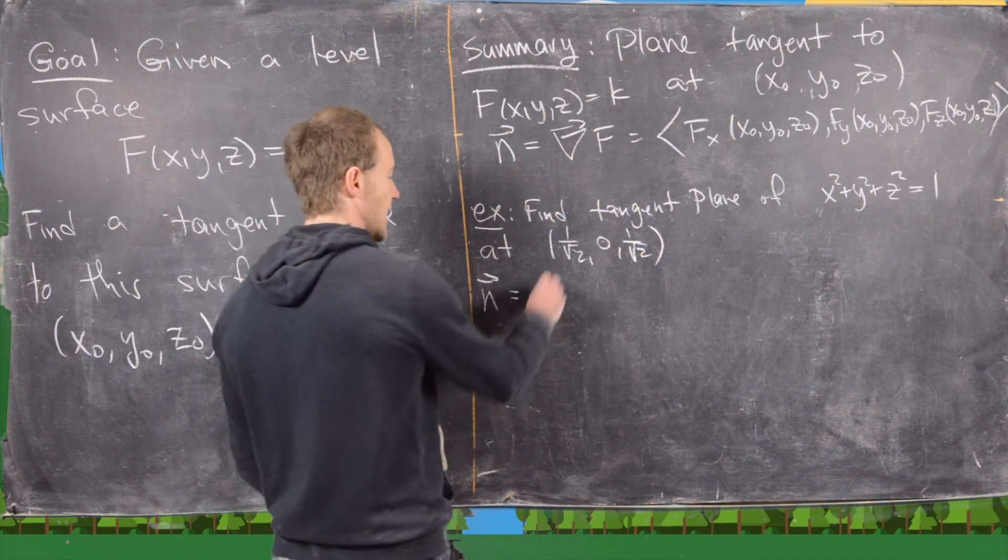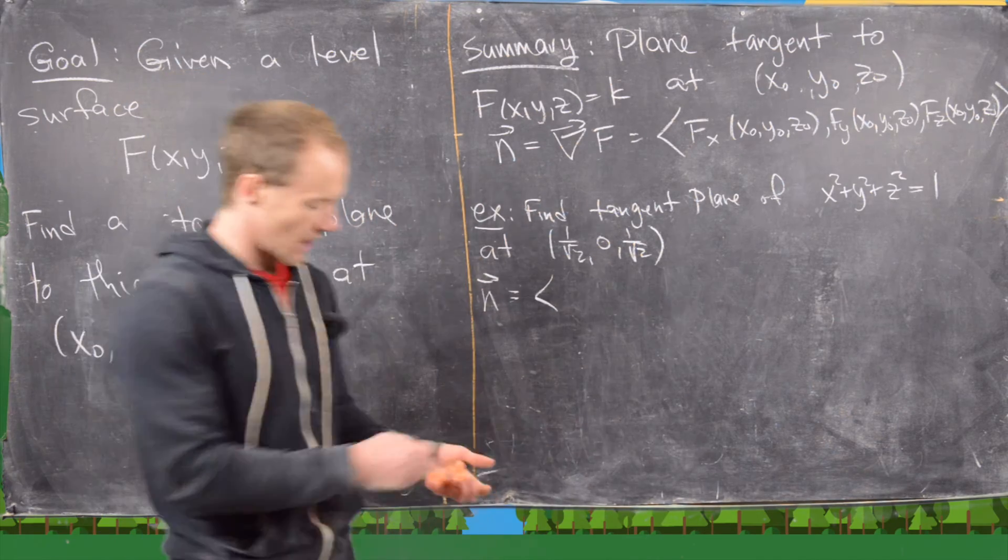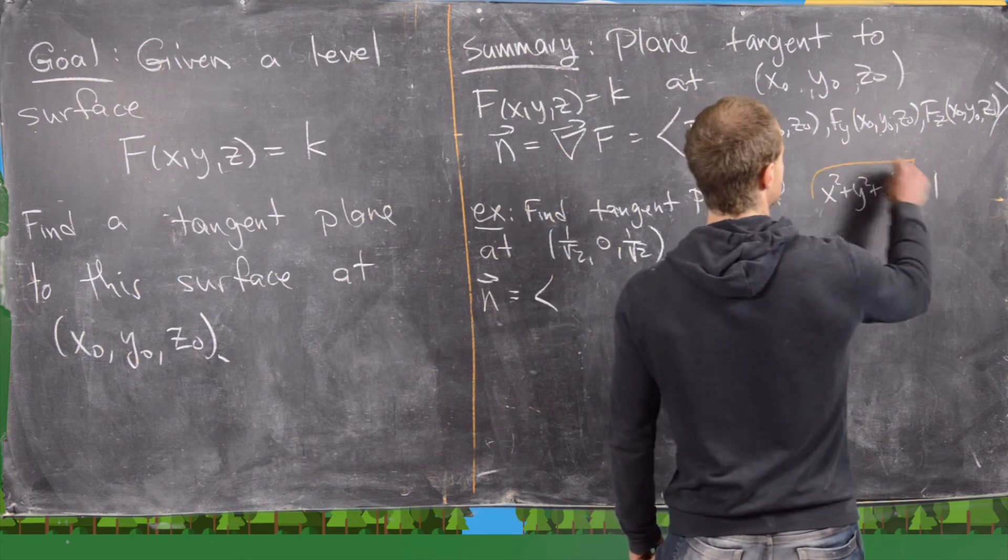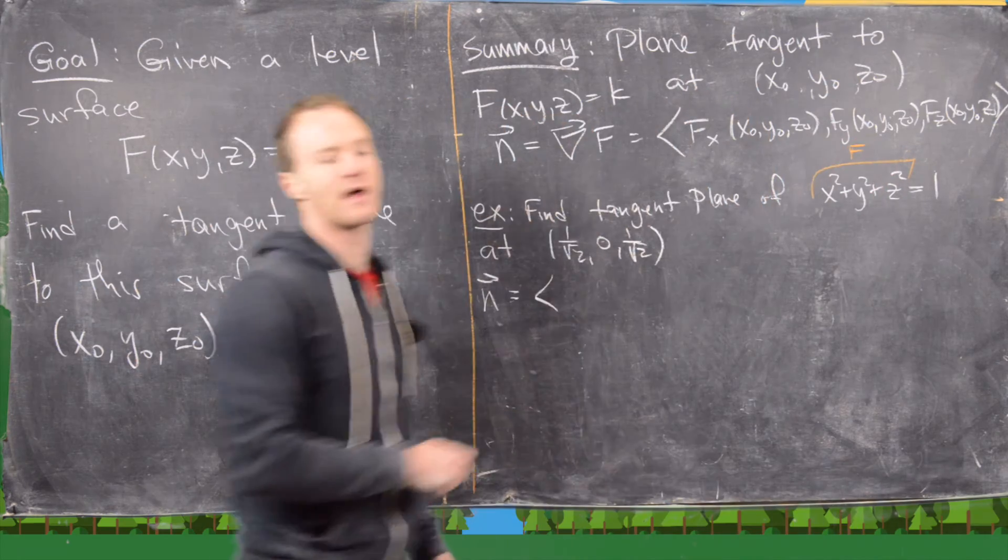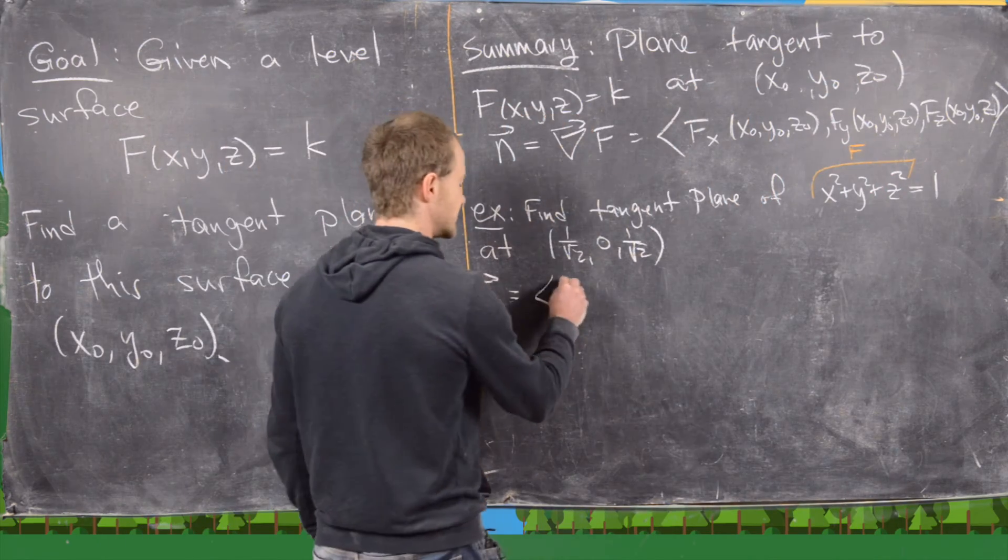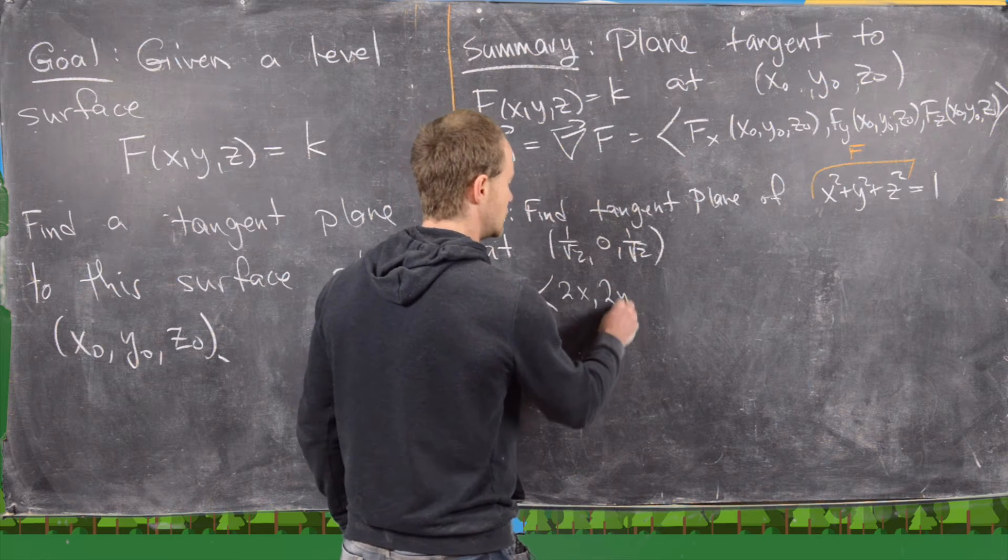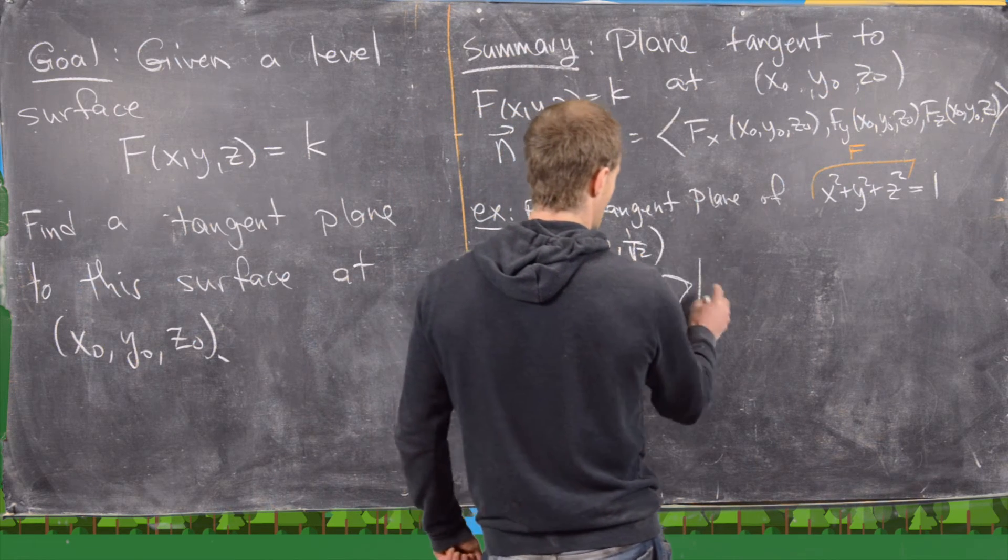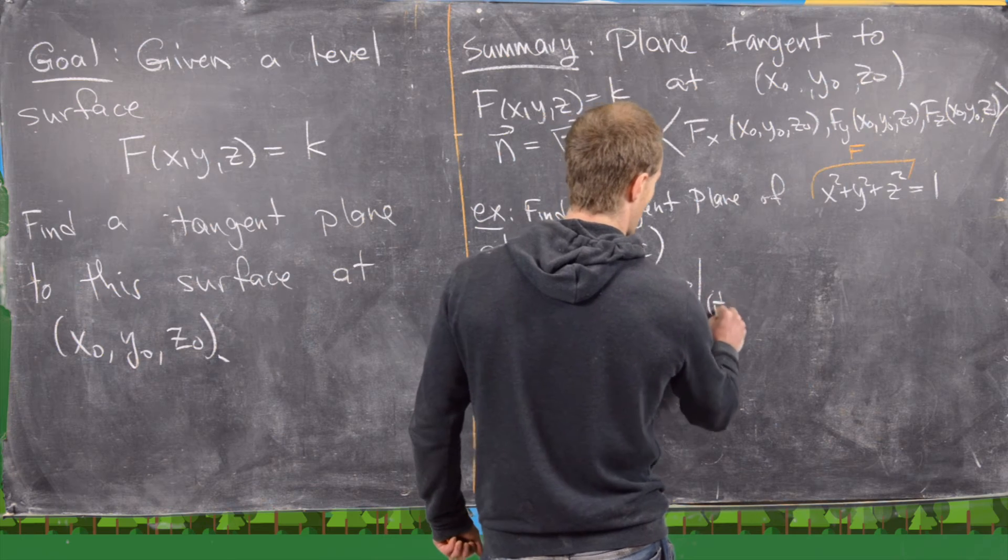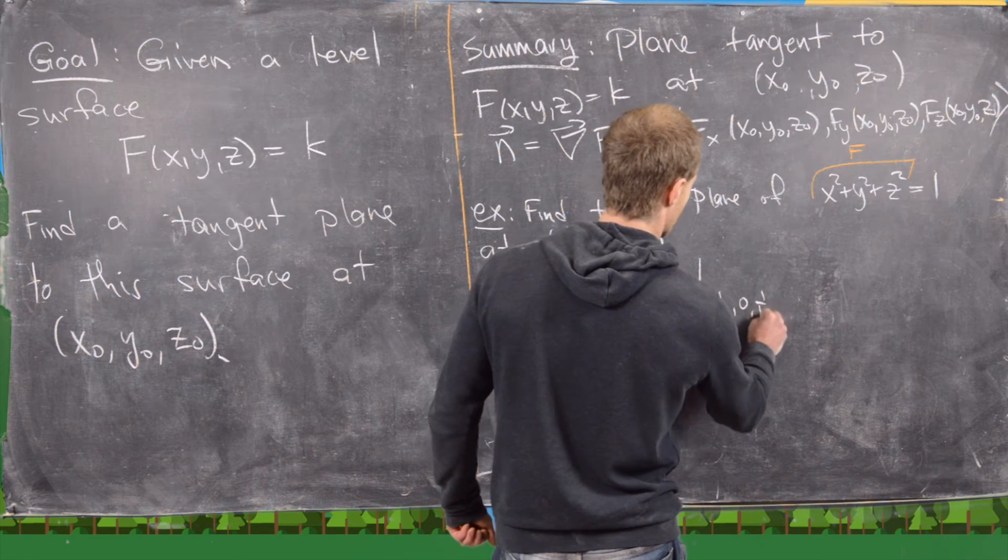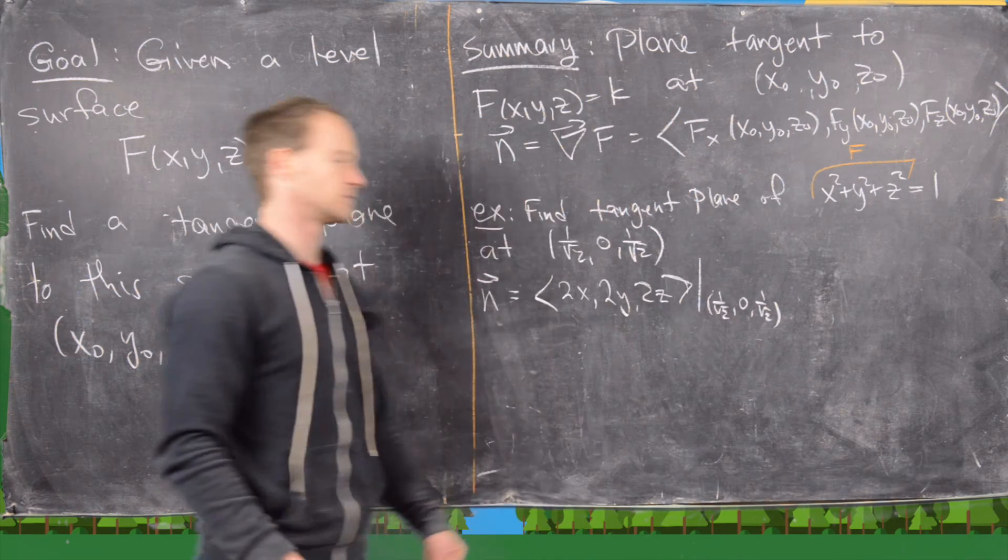So notice that's going to be this gradient of this function. So this function is playing the role of capital F in this case. So notice that's going to give us 2x, 2y, 2z. And now we need to plug in our point, 1 over root 2, 0, 1 over root 2.